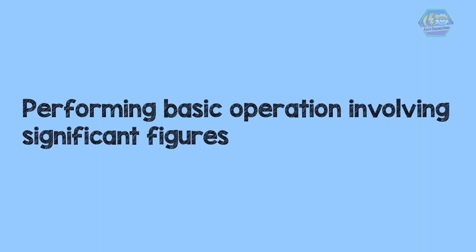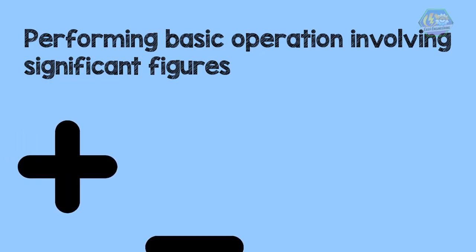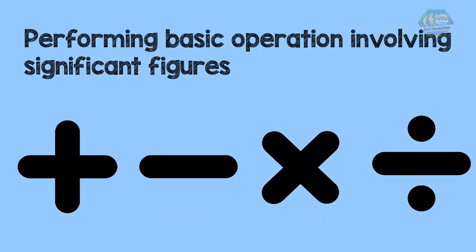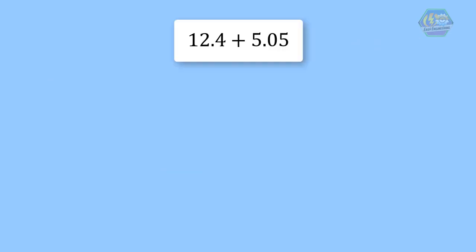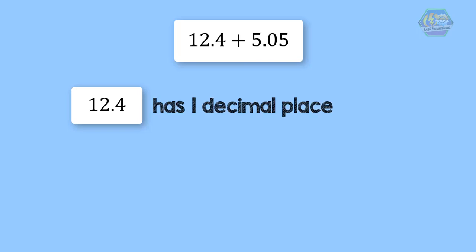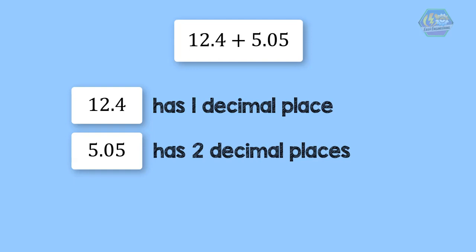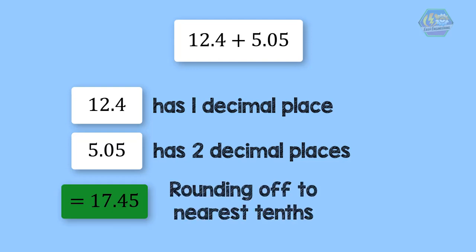Now, how about performing basic operations involving significant figures? There are also rules if you perform basic operations like addition, subtraction, multiplication, and division. For addition and subtraction, you just add or subtract them in the normal way and round off your answer to the least number of decimal places of any number in the problem. For example, 12.4 plus 5.05: 12.4 has one decimal place and 5.05 has two decimal places, so the answer should be reported to one decimal place.